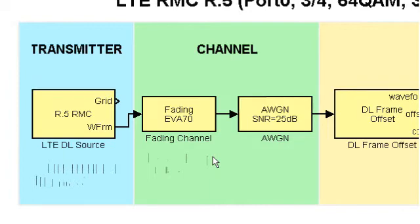Two receive antennas will be used, therefore our receiver will use receive diversity to combine these signals. Additive white Gaussian noise is then added to the waveform at an SNR of 25dB.